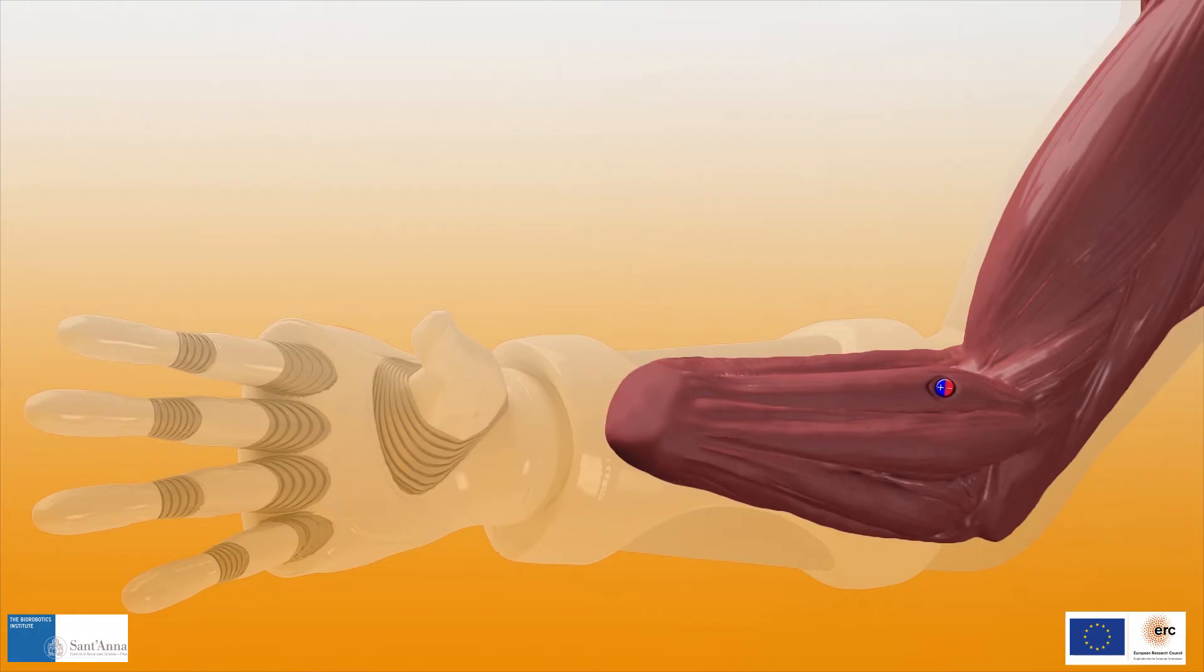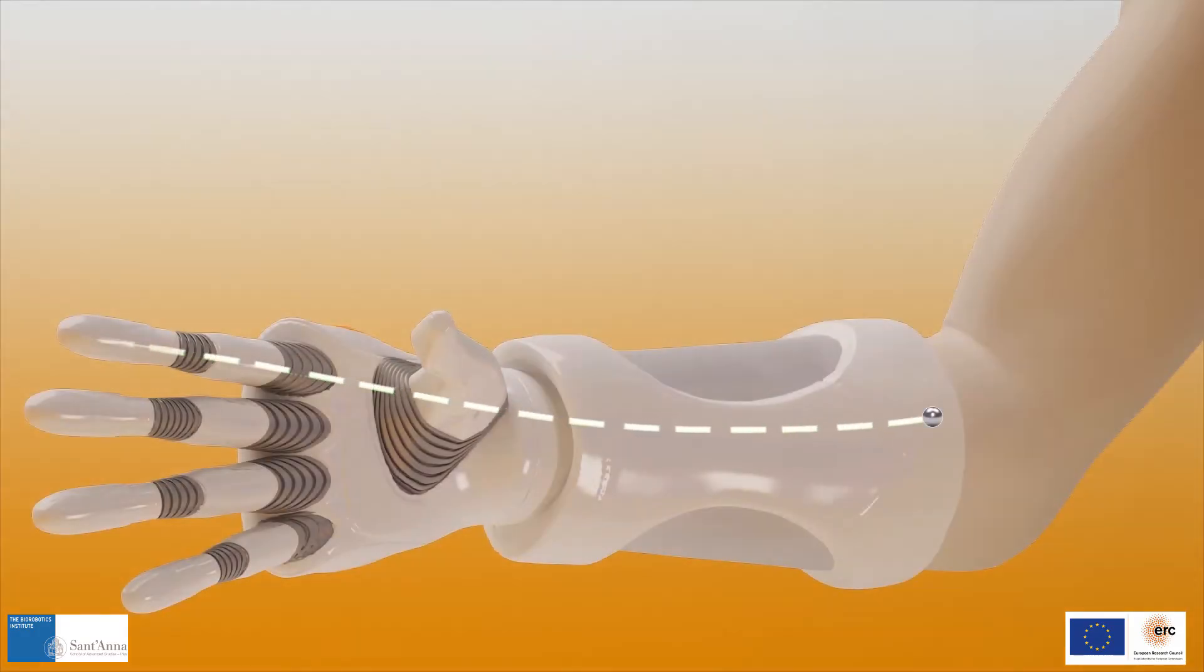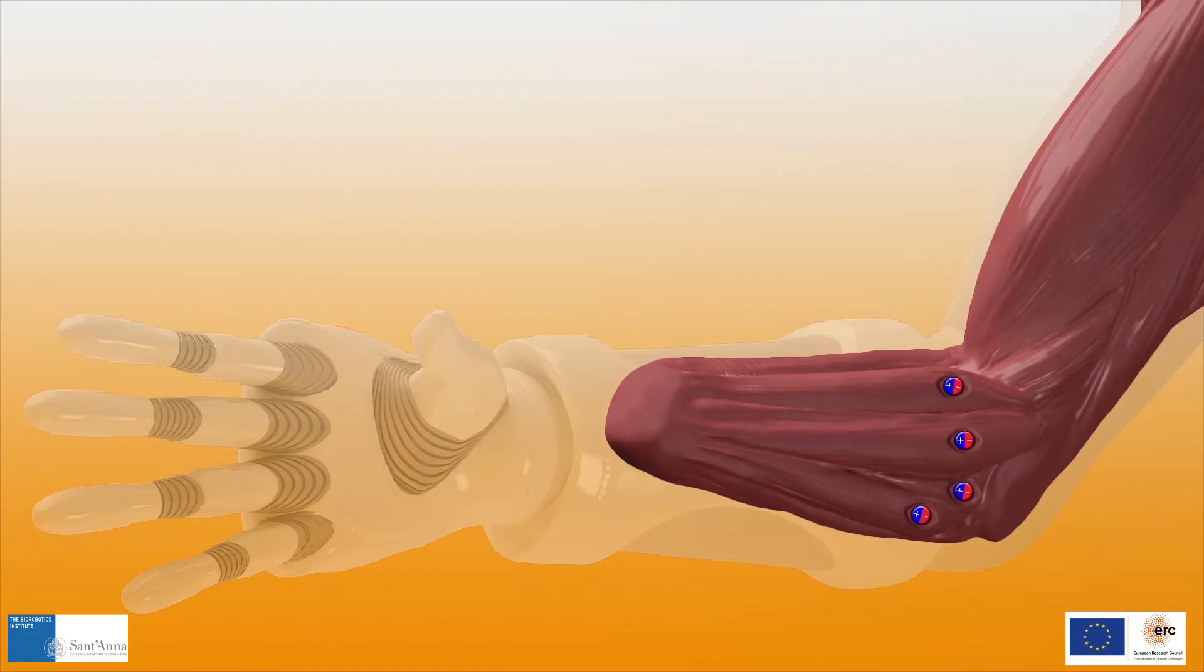In fact, the user will be able to move the implanted magnets by simply contracting his muscles. The magnets will travel with the muscle they are located in and their localization will provide a direct measure of the contraction elongation of those muscles.